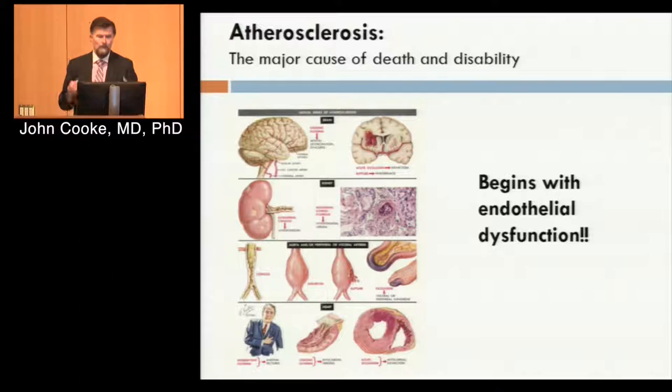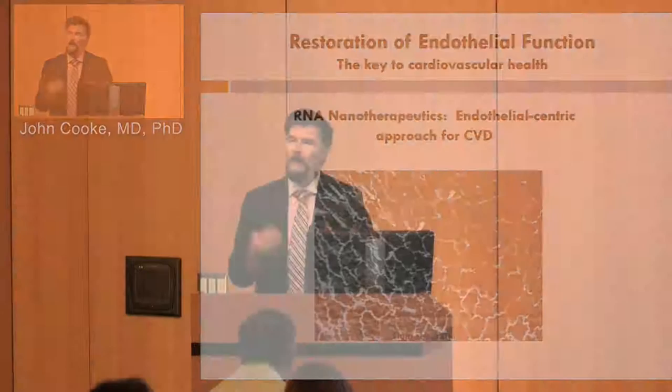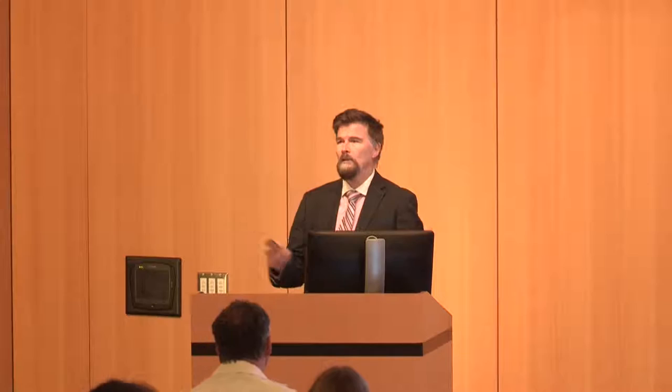In conclusion, atherosclerosis begins as an endothelial dysfunction, and I think that if we can restore endothelial health — and there are many ways to do that — RNA nanotherapeutics may be one such approach for these children with progeria, and ultimately for all of us. Thank you.